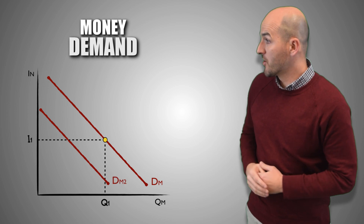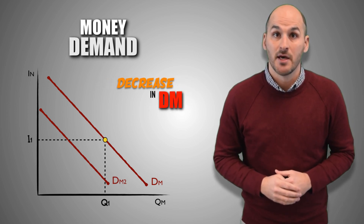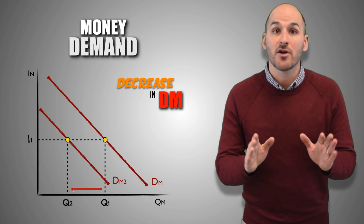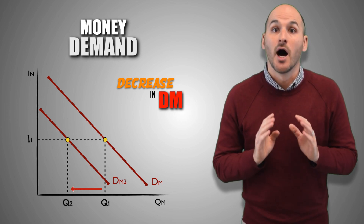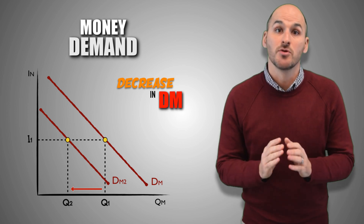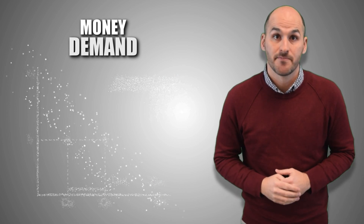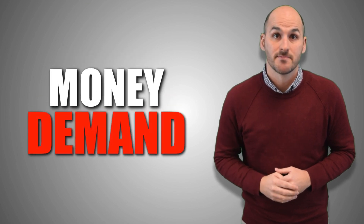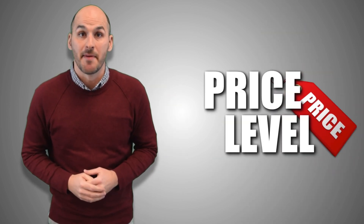A leftward shift of the money demand curve indicates that the demand for money has decreased in the aggregate economy, and a lesser quantity of money is being used, no matter the nominal interest rate — consumers and other borrowers are using less money. Let's take a closer look at money demand. A change in price level will fundamentally change money demand.